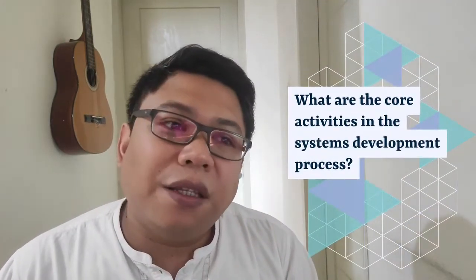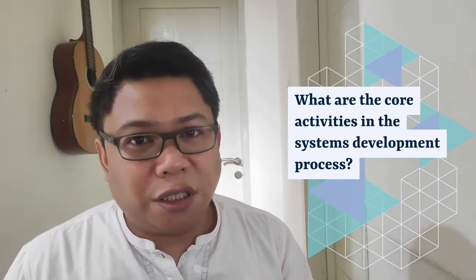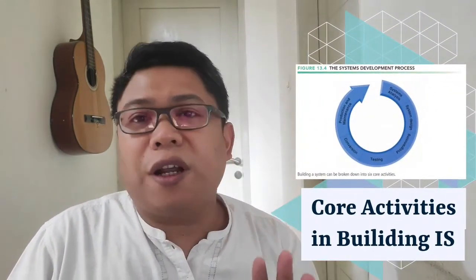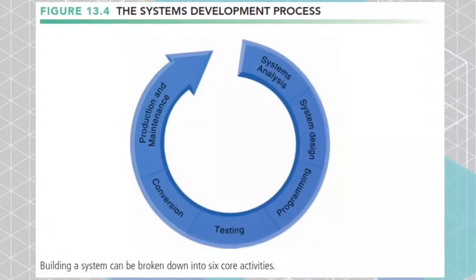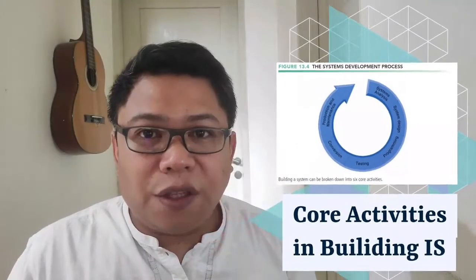The next topic is: what are the core activities in the system development process? There are six core activities in building information systems: system analysis, system design, programming, testing, conversion, and production and maintenance. I will discuss each one in the following slides.